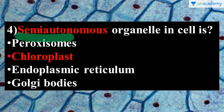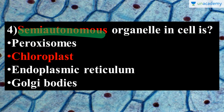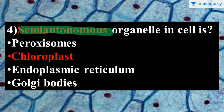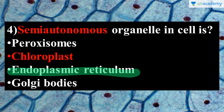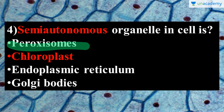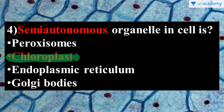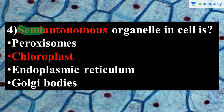The next question is: which is a semi-autonomous organelle in the cell? Semi-autonomous means having their own DNA, the ability to replicate or divide independently, and the ability to make their own food. The four options are peroxisomes, chloroplast, endoplasmic reticulum, and Golgi bodies. Endoplasmic reticulum, Golgi bodies, and peroxisomes are not semi-autonomous as they depend on the cell. Chloroplast has its own DNA, can prepare its own energy, and can divide — but it still depends on the cell's health and essential materials, which is why it is called semi-autonomous. The correct answer is chloroplast.